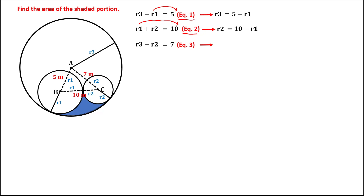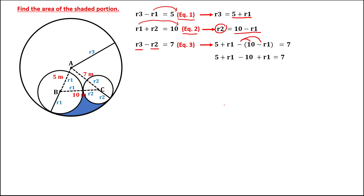For equation number 3, substitute the value for R3: R3 equals 5 plus R1, then minus R2, where R2 is 10 minus R1, equals 7. Distribute the negative: 5 plus R1 minus 10 plus R1 equals 7. Combining like terms: 2R1 minus 5 equals 7, so 2R1 equals 12, therefore R1 equals 6.